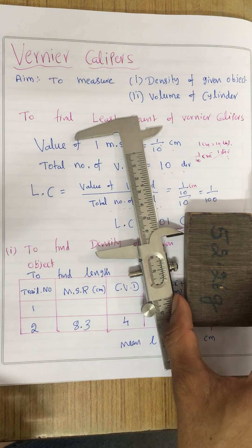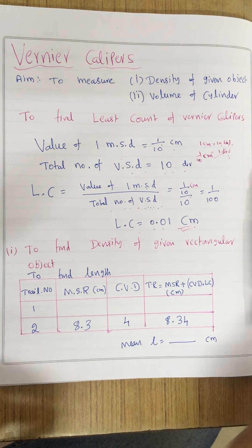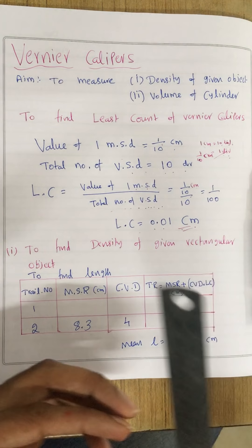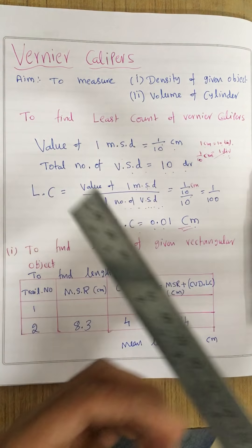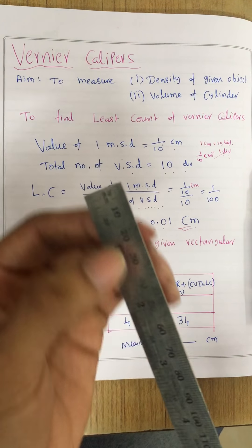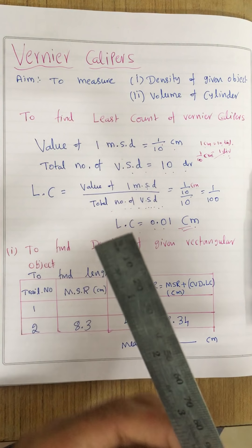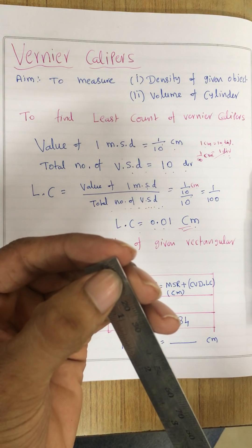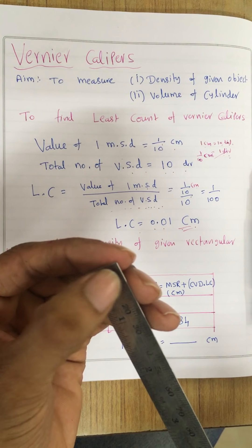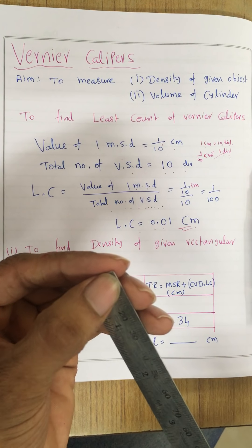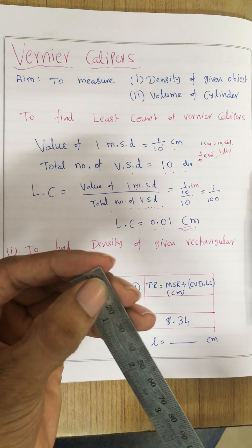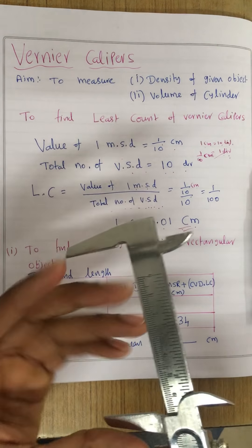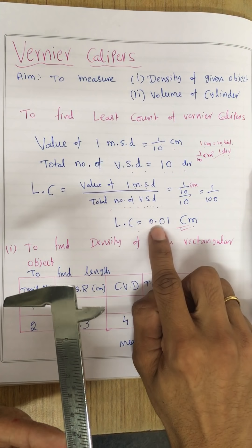Before I get into measurement, the first thing I have to worry about is the least count of any measuring apparatus. For example, if you take a meter scale — it is actually 15 centimeter, but anyway, it is a meter scale — one centimeter has totally 10 divisions. So the least measurement I can make is 1/10th of a centimeter, that is 0.1 centimeter. Now, if I talk about vernier calipers, the least measurement I can make is 0.01 centimeter.